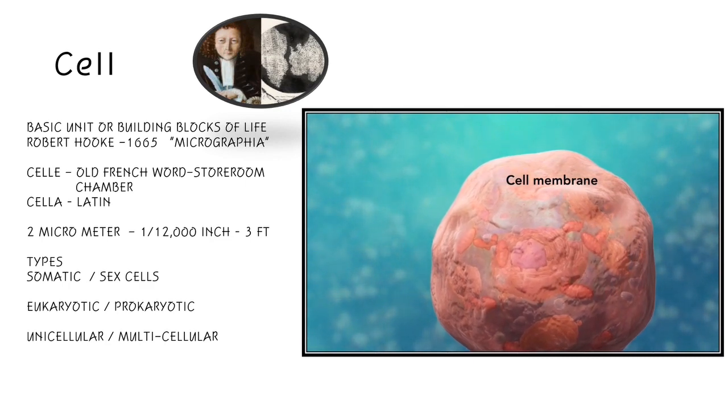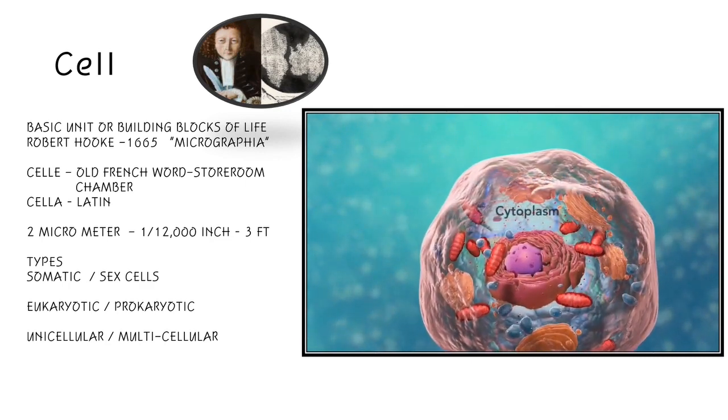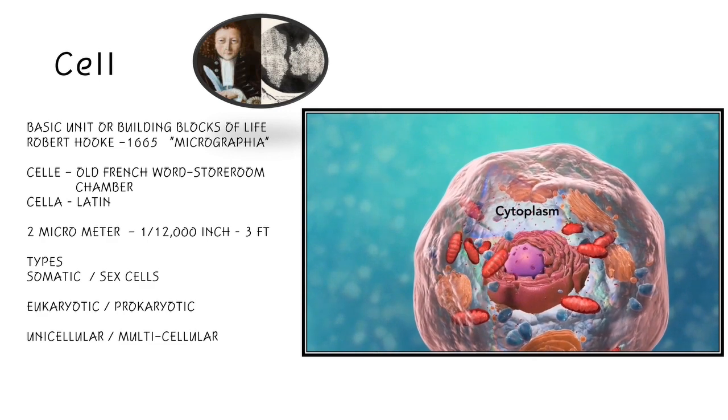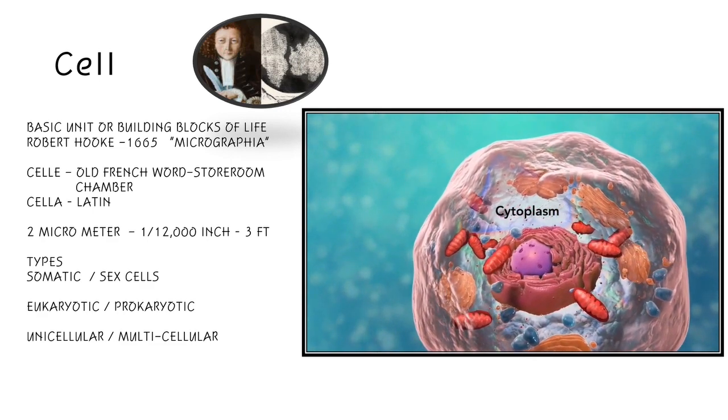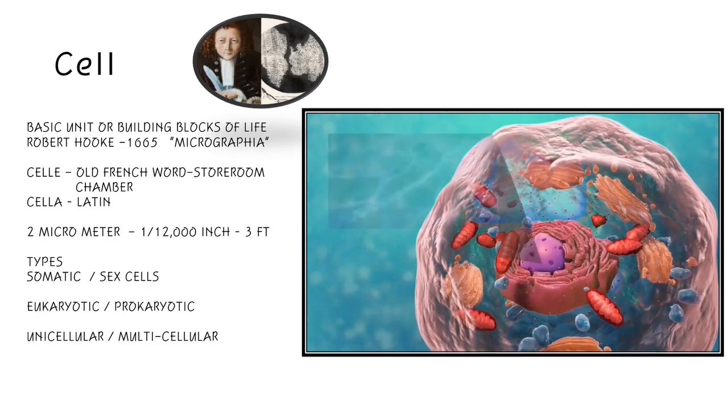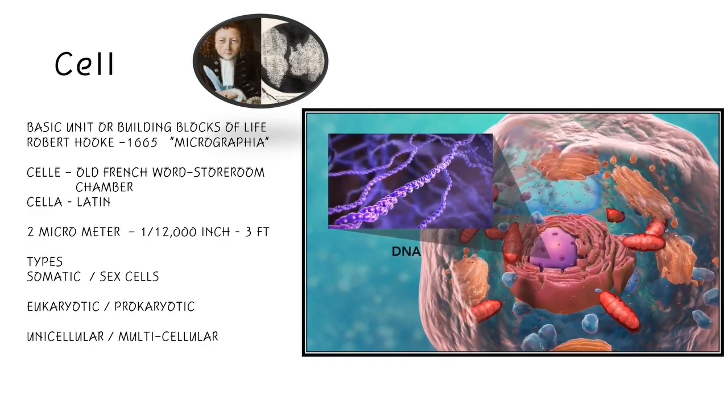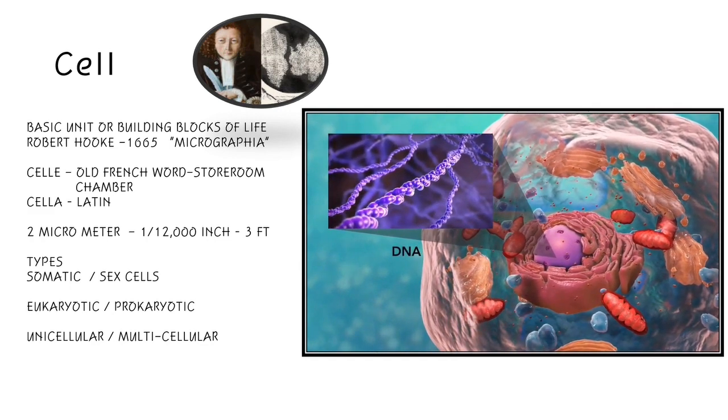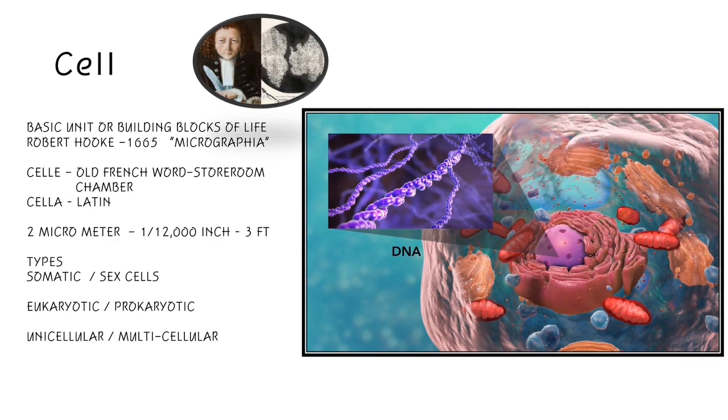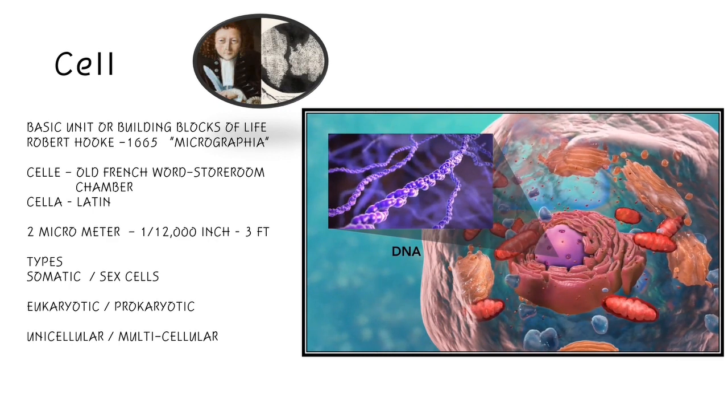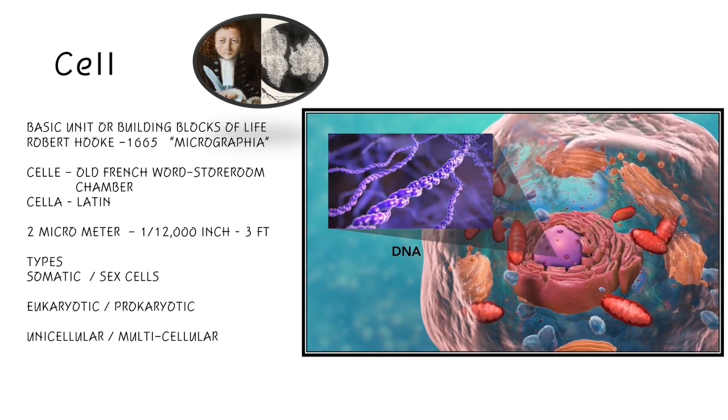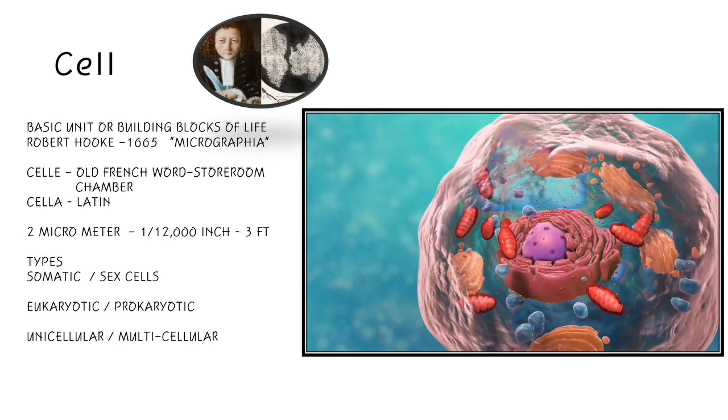The description was based on microscopic cork from a plant cell. Cell was derived from cele, an old French word, and cela, a Latin word, meaning storeroom or a chamber. The smallest cell can be as small as 2 micrometers, or 1 over 12,000 of an inch, and the biggest is around 3 feet.